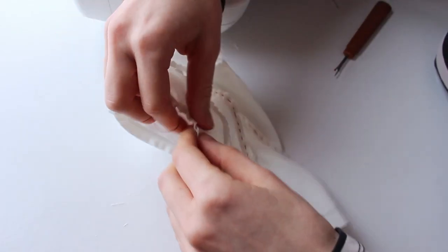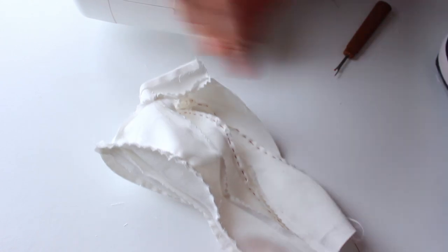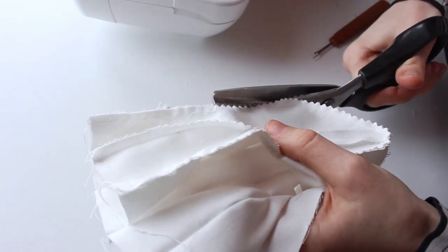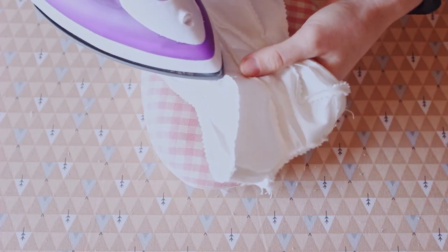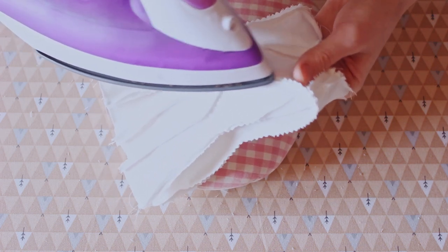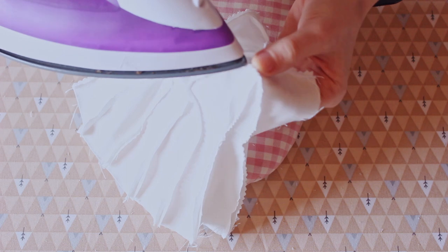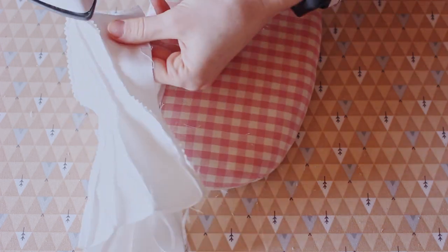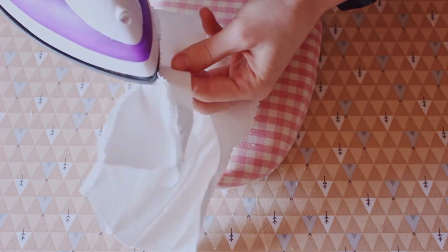Now, remove the basting stitches if you made them and notch the seam allowance. Press both of the seams open. It could be a bit difficult. As you can see here, I'm doing it using my hand as an ironing board. It worked and I didn't burn my fingers, but you probably shouldn't do that at home.